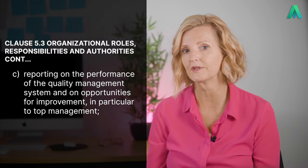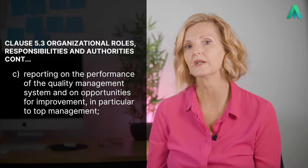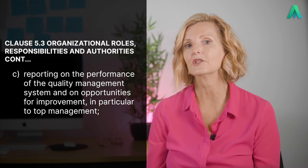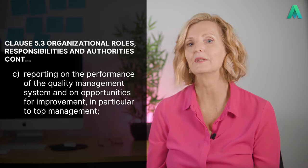Then following this, point C states that there should also be someone responsible and with authority for reporting on the performance of the quality management system and on opportunities for improvement, in particular to top management. This makes sense based on the previous two points. Obviously, if you are monitoring whether the quality management system conforms to the standard and that the processes are delivering intended outputs, then there would have to be some objective reporting provided to top management to demonstrate the status of the system — is it conforming? Is it not? Where are the areas that can improve?